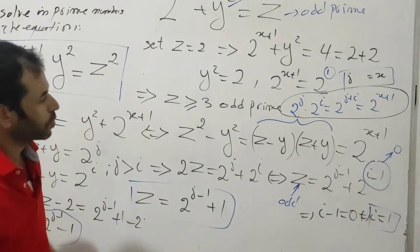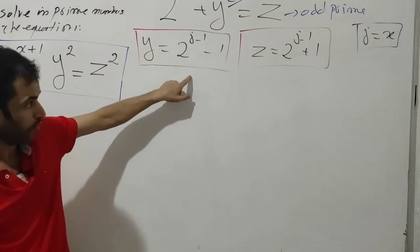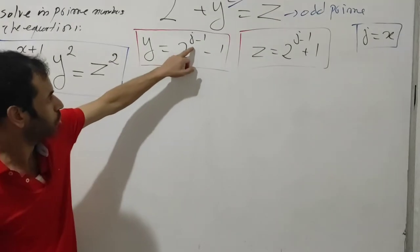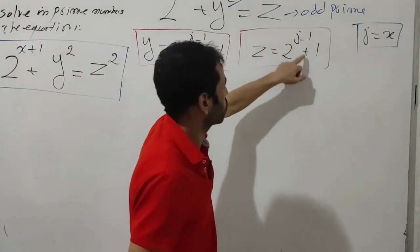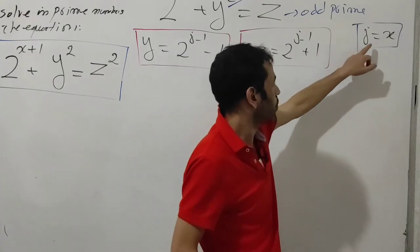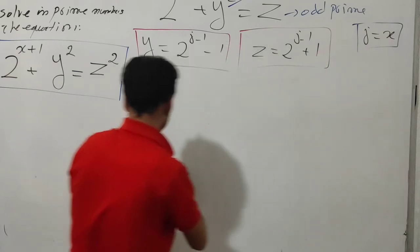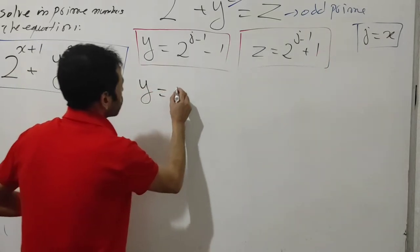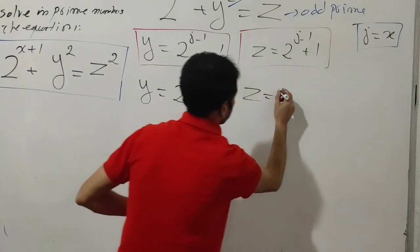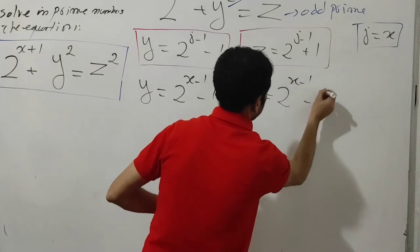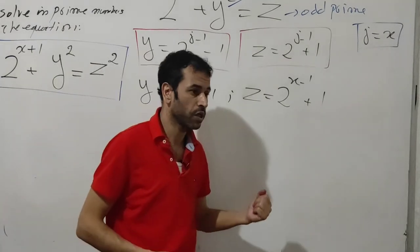Substituting j = x, we get y = 2^(x-1) - 1 and z = 2^(x-1) + 1. Now x has two possibilities: even prime or odd prime. If x = 2, then y = 2^(2-1) - 1 = 2 - 1 = 1. This is impossible because y must be an odd prime.